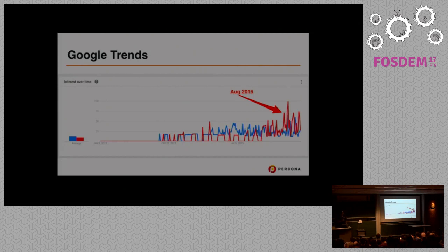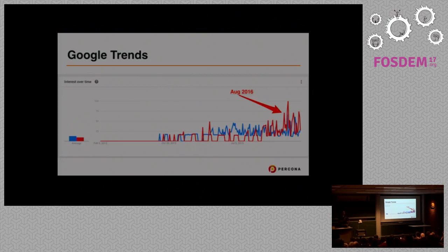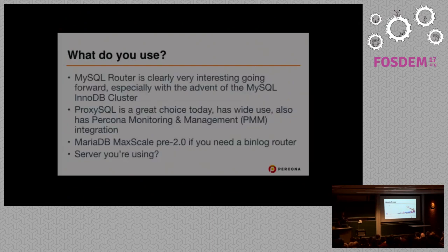And a metric that I don't think is a metric — if you cared about Google Trends, this is a joke of course. The red line is ProxySQL, and it starts spiking a lot in August of 2016. I'm guessing you all read the news and know why.